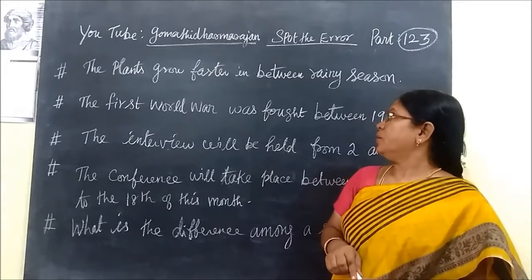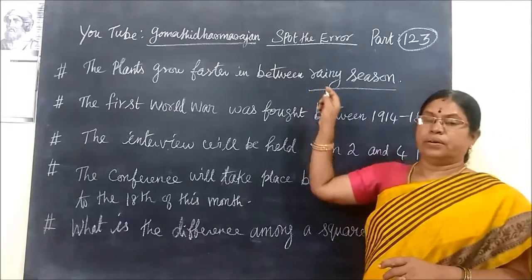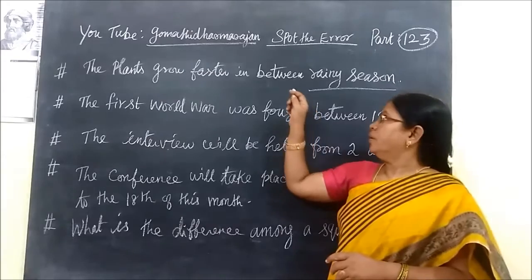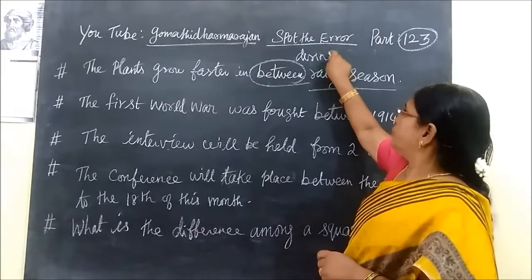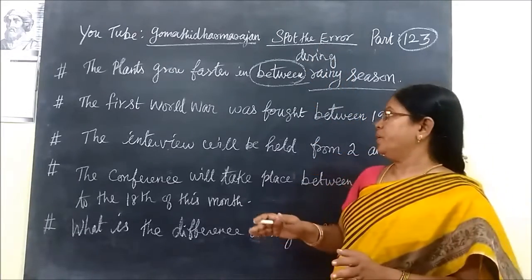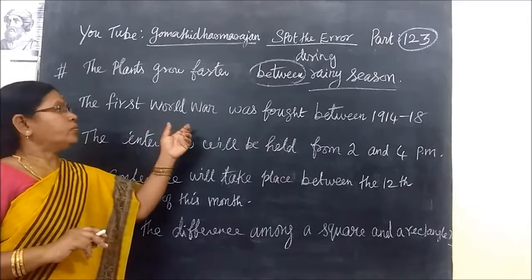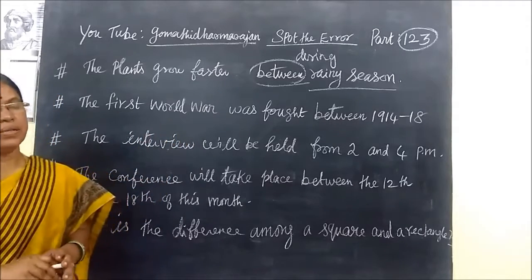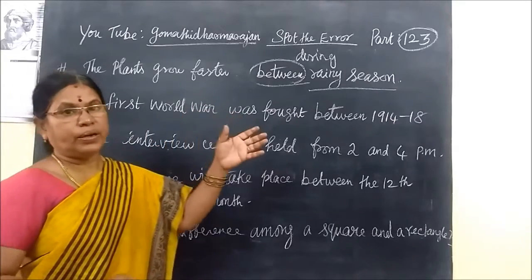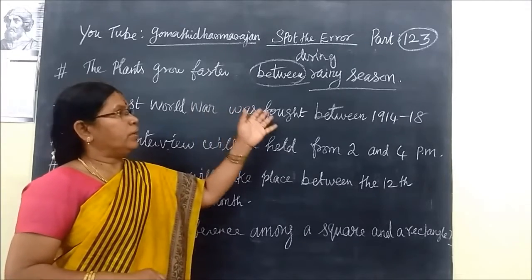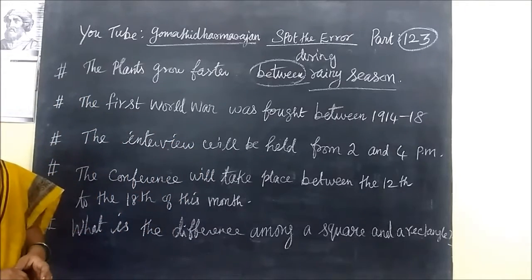The plants grow faster 'in between' rainy season. Here it is written 'in between,' but you have to write 'during' - because 'during' is used for a particular period. The plants grow faster 'during' rainy season, not 'between' rainy season. 'Between' is used for two separate seasons, like between summer and winter.